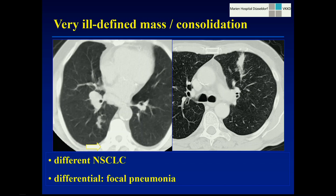On the other side of the spectrum, away from the very well-defined round lesion, we may have very irregular appearances of lesions which make us think of focal pneumonia in the first place. Both these lesions were biopsied and both represented non-small cell lung cancer. So even if it looks like focal pneumonia, if there's no history to explain it or no supporting laboratory values, it may well represent lung cancer.